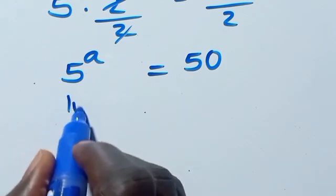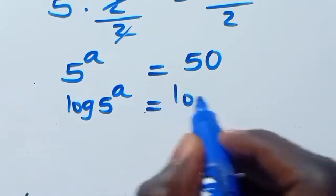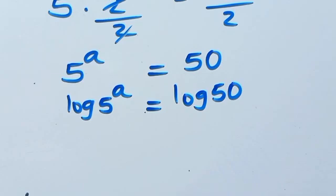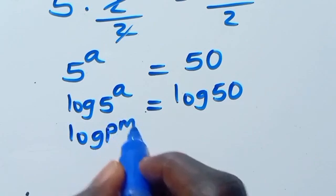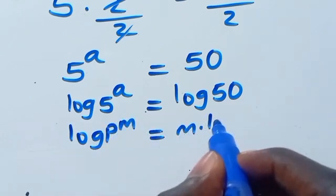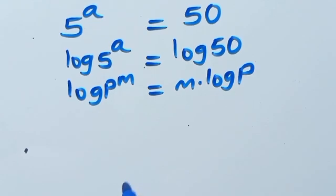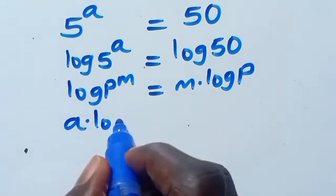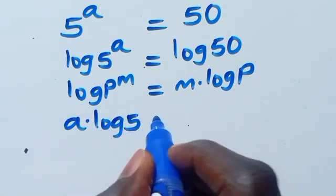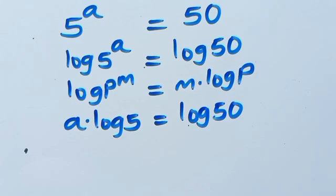From here, let us introduce log to both sides. We have log of 5 to the power of a equals log of 50. Using the log power rule — log of p to the power of m equals m times log p — we get a times log 5 equals log 50.